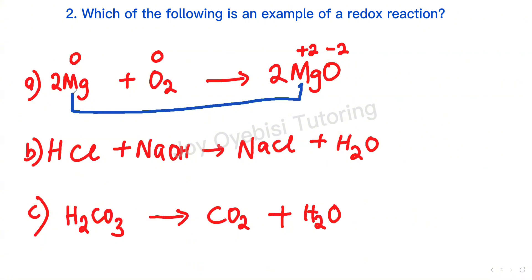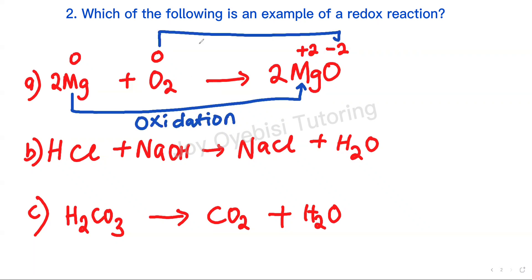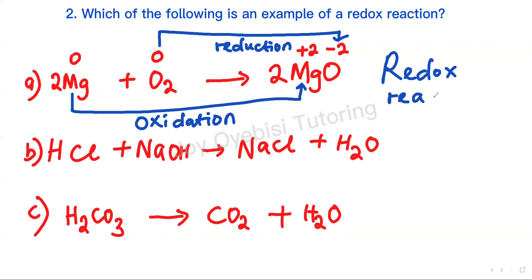Magnesium goes from 0 to positive 2, which is an increase — that is known as oxidation. Oxygen goes from 0 to negative 2, and that is a decrease — that is called reduction. So when you have reduction and oxidation happening simultaneously, we say that reaction is a redox reaction.